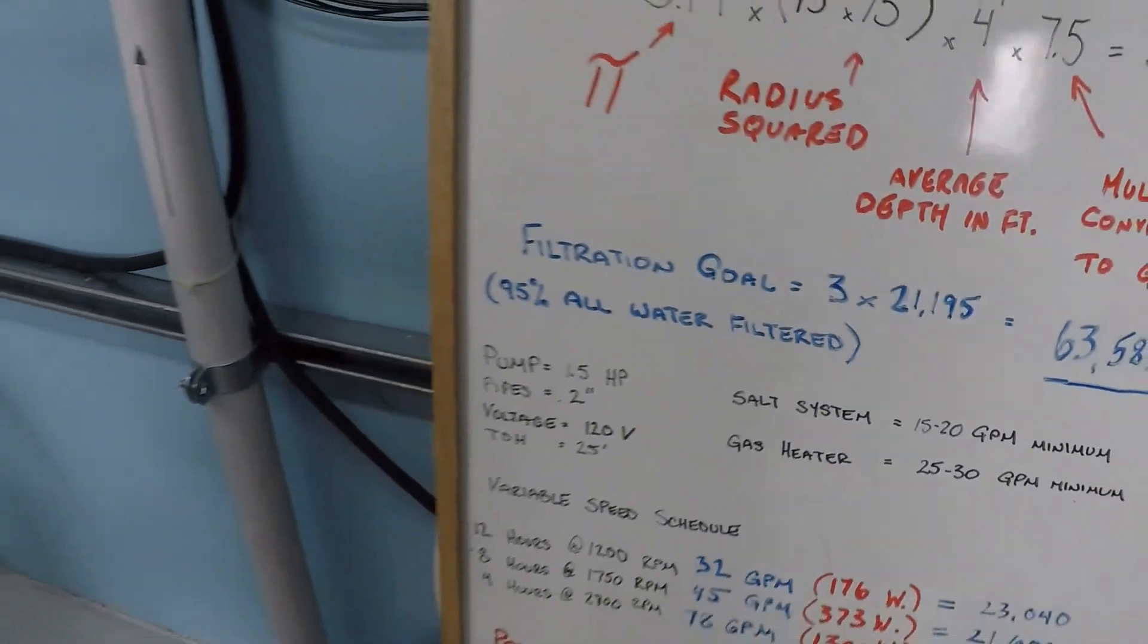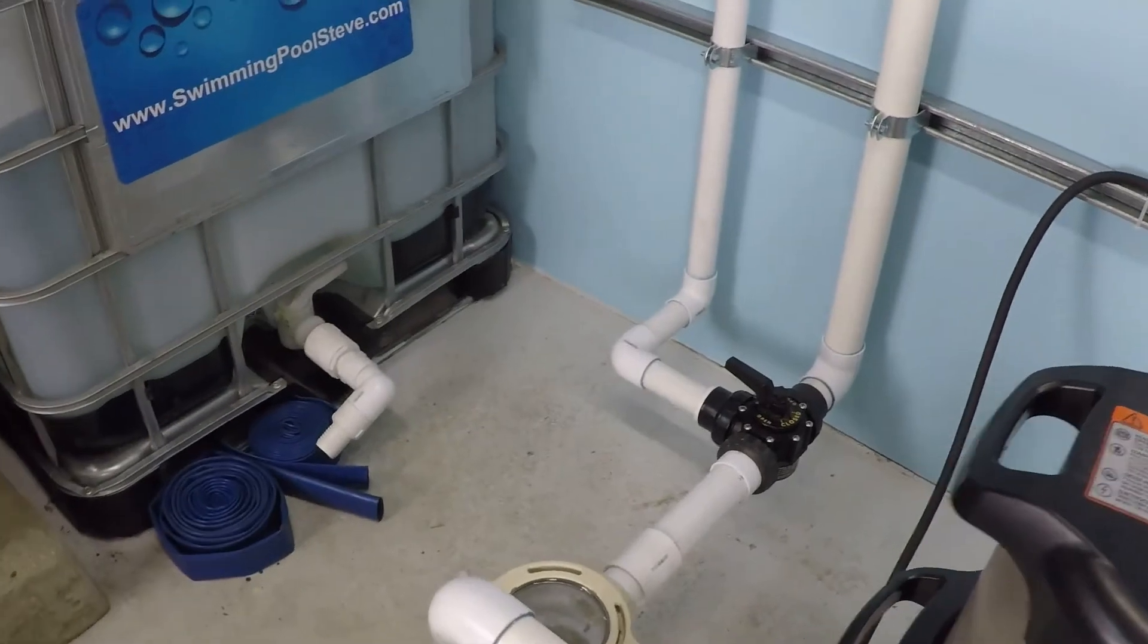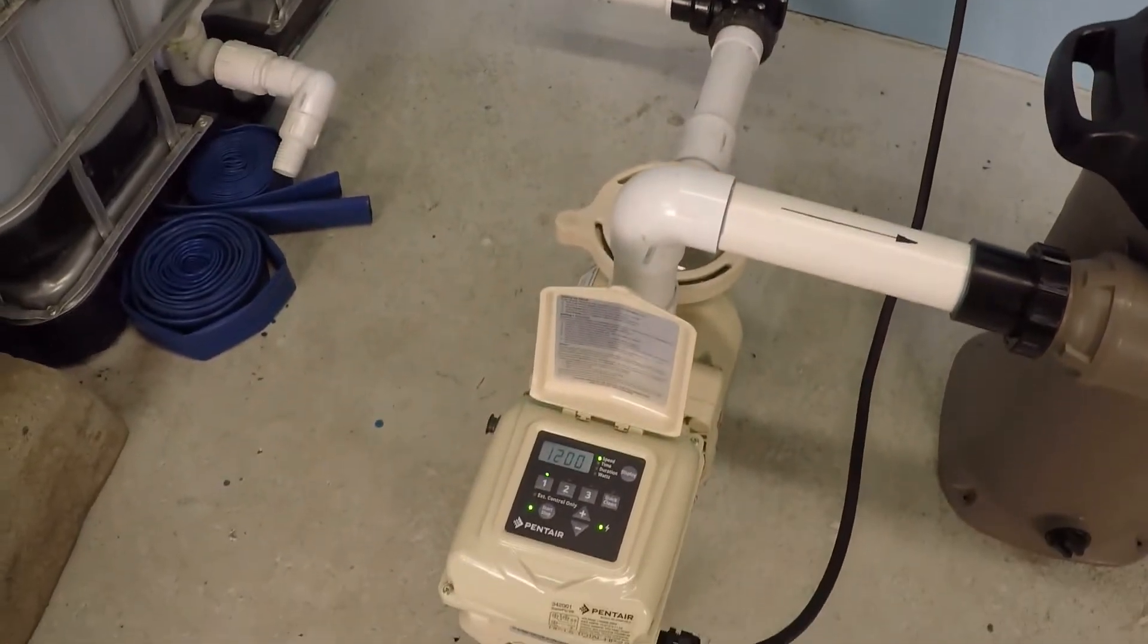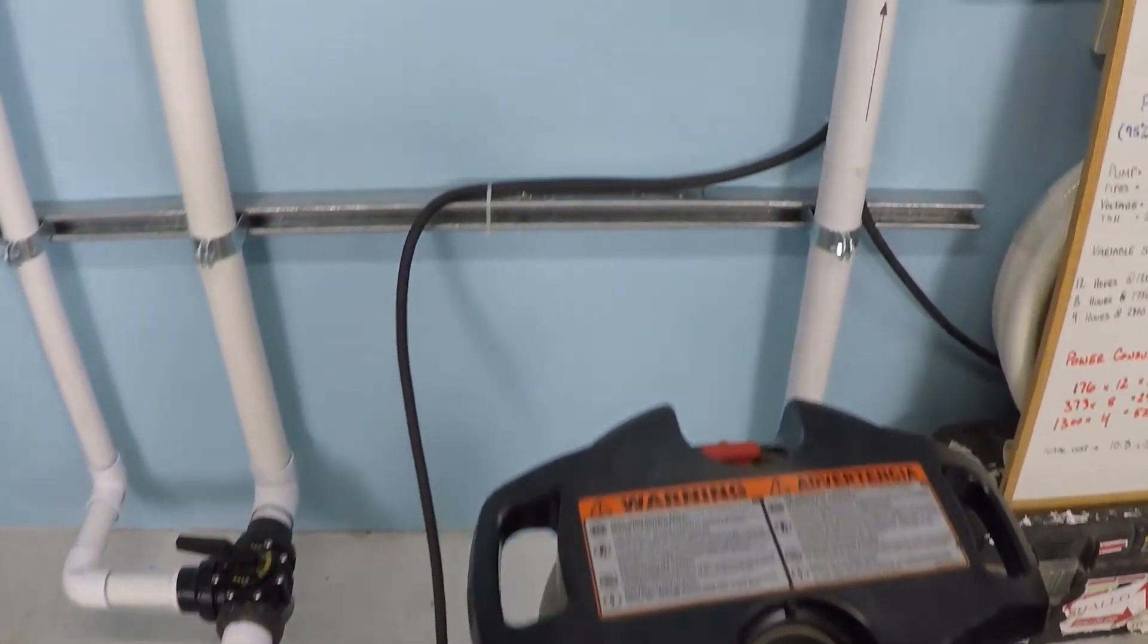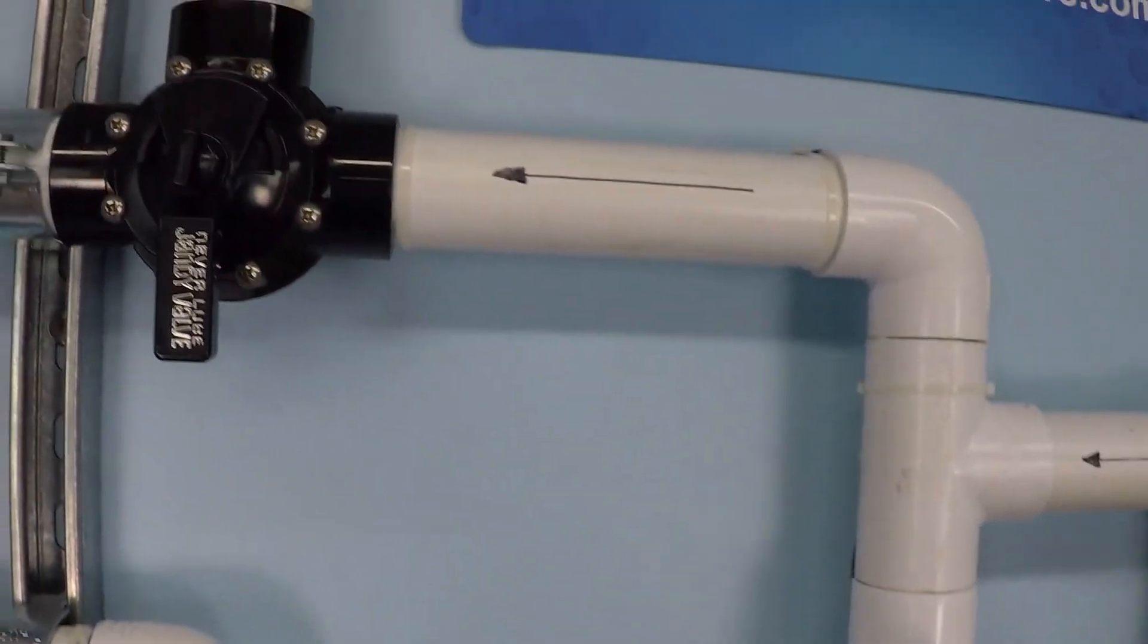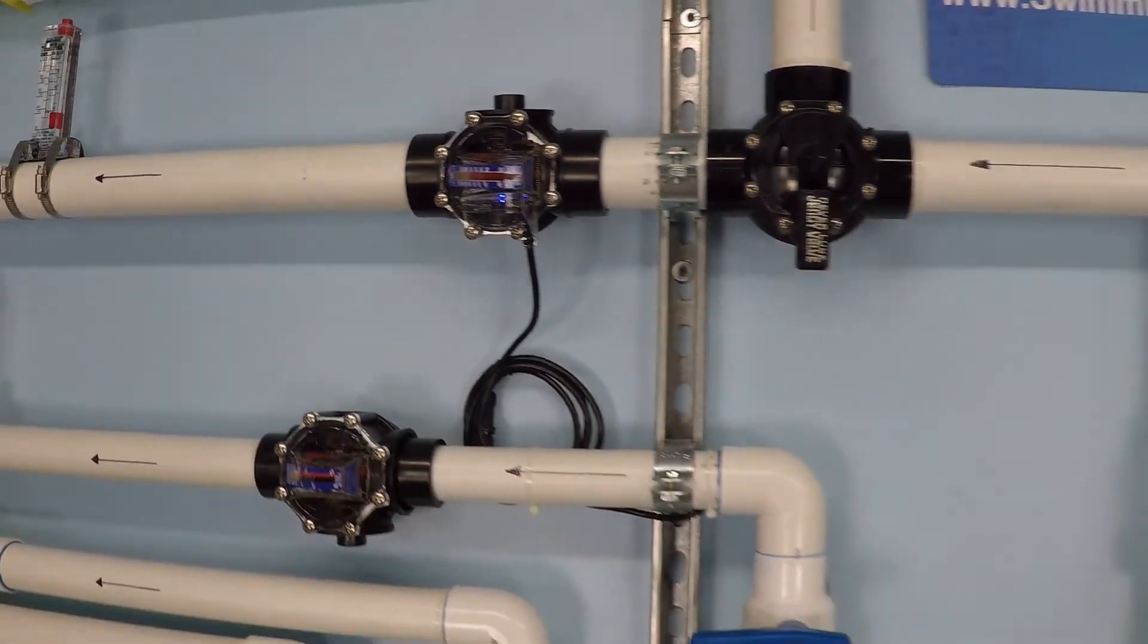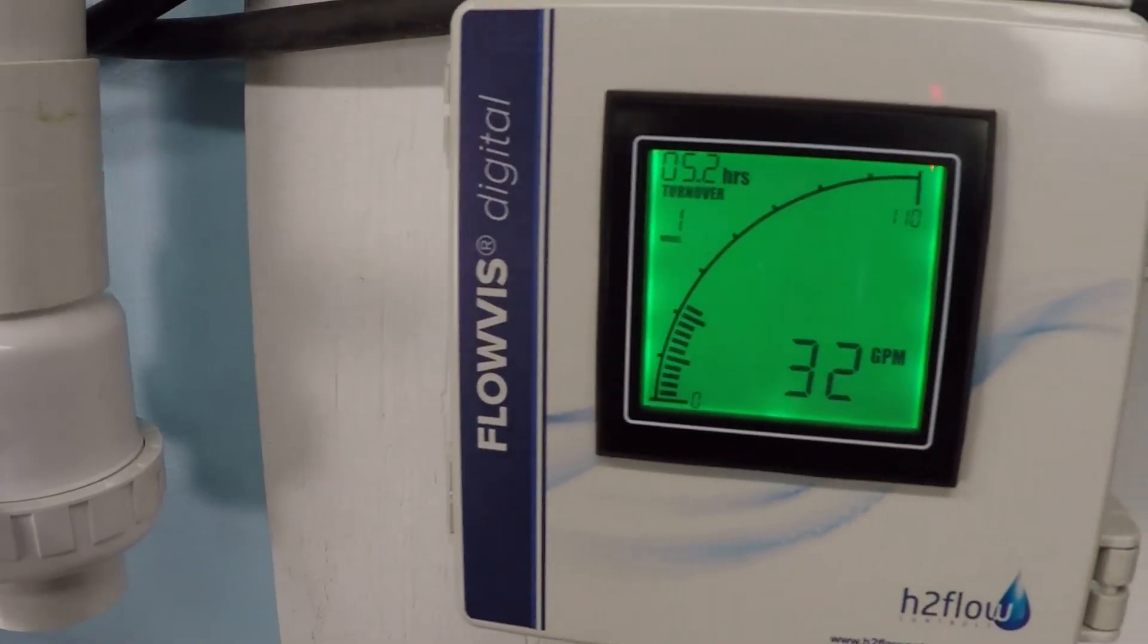Let's take a look at this system now. We have a two inch suction, two inch return on this system. There's the two inch suction line there. One and a half horsepower variable speed pump, 150 square foot cartridge filter. We're monitoring the flow rate today through this two inch line with this analog flow meter which has been adapted with this digital readout here. Very convenient.